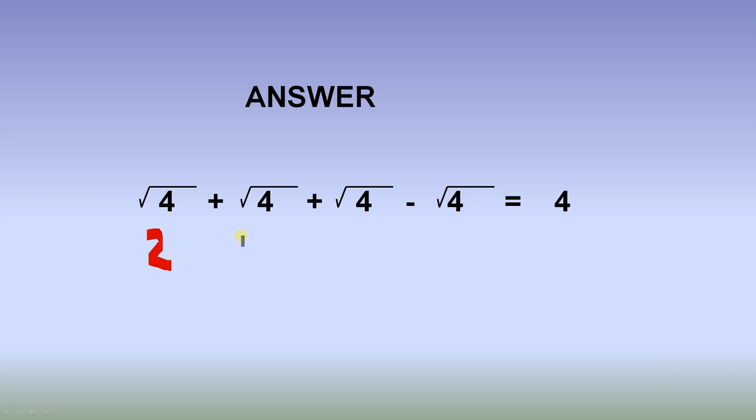Square root of 4 is 2. So we have 2 plus 2 plus 2 minus 2, which gives you 4. So we've answered the question.